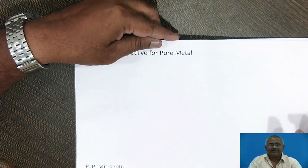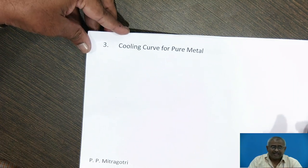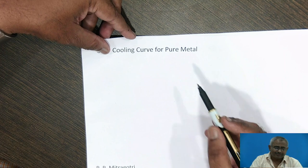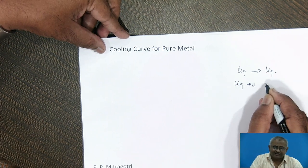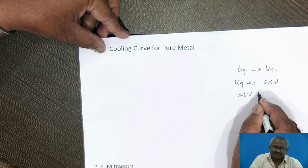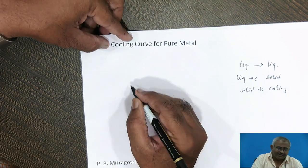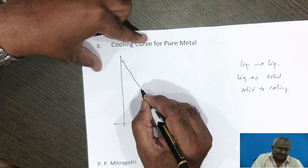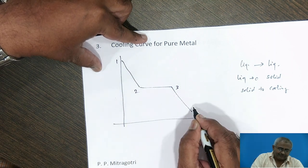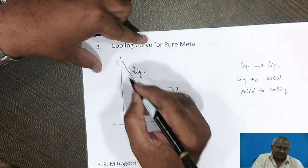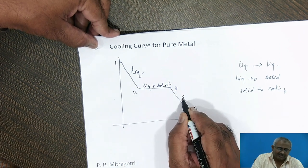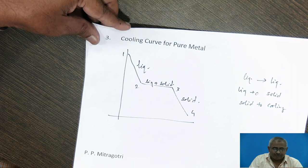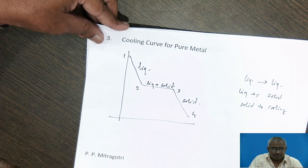We will begin our discussion with the cooling curve for pure metal. The cooling curve from liquid to solid state will have three stages of cooling. The first stage will be liquid cooling, and the third stage will be solid-to-solid cooling. The cooling curve for pure metal will appear like this. One to two will tell us regarding liquid-to-liquid cooling, two to three will be liquid-to-solid transformation, and then from three to four, the solid will cool from higher temperature to room temperature.